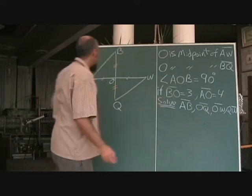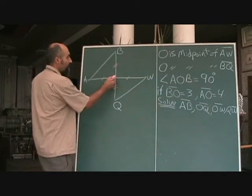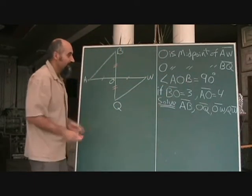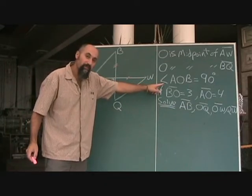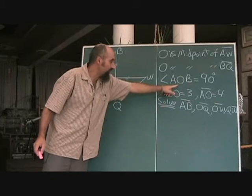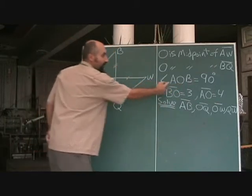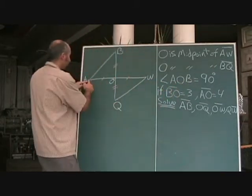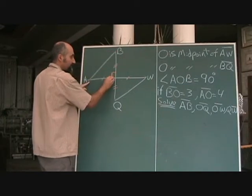Angle AOB is 90 degrees. The way angle representation goes, the middle one is the point that they're talking about. So you start off from here and you go down. So AOB. So this guy is 90 degrees.